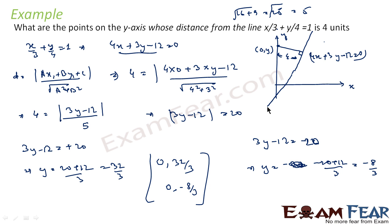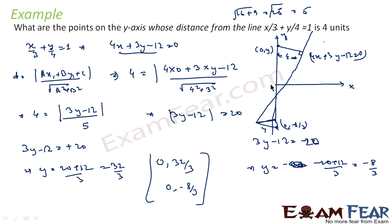Logically, if we extend this line, there are two points on the Y-axis from where the distance is 4 units for this line — one gives (0, -8/3) and the other gives (0, 32/3). So there are two valid points on the Y-axis.